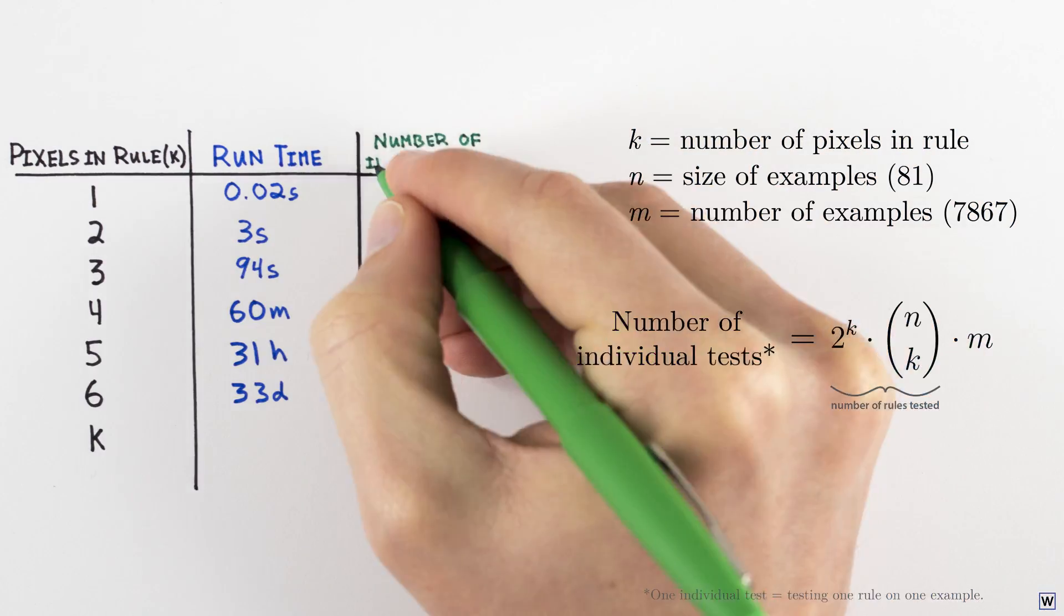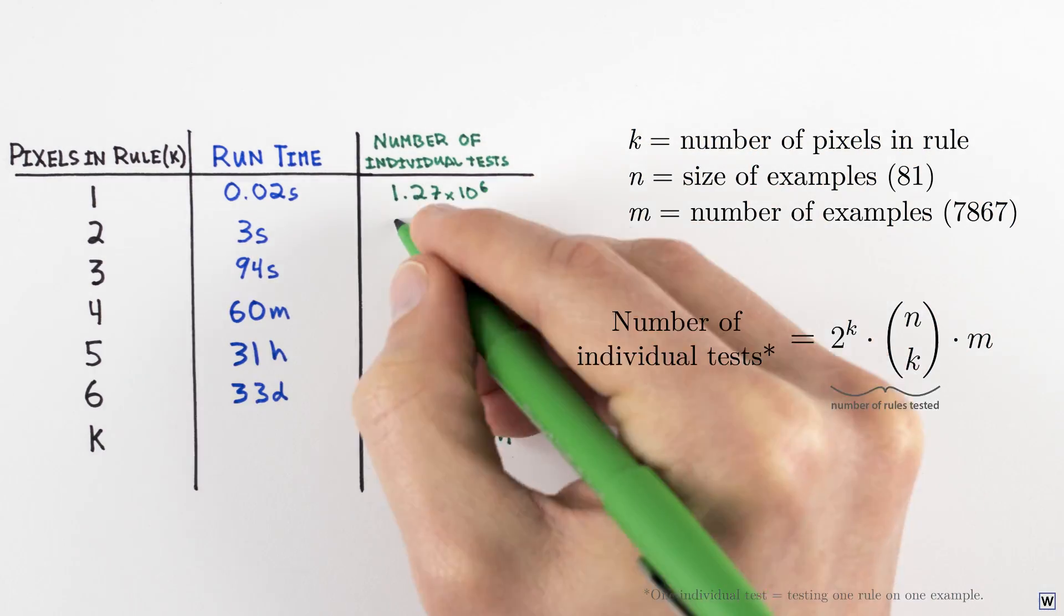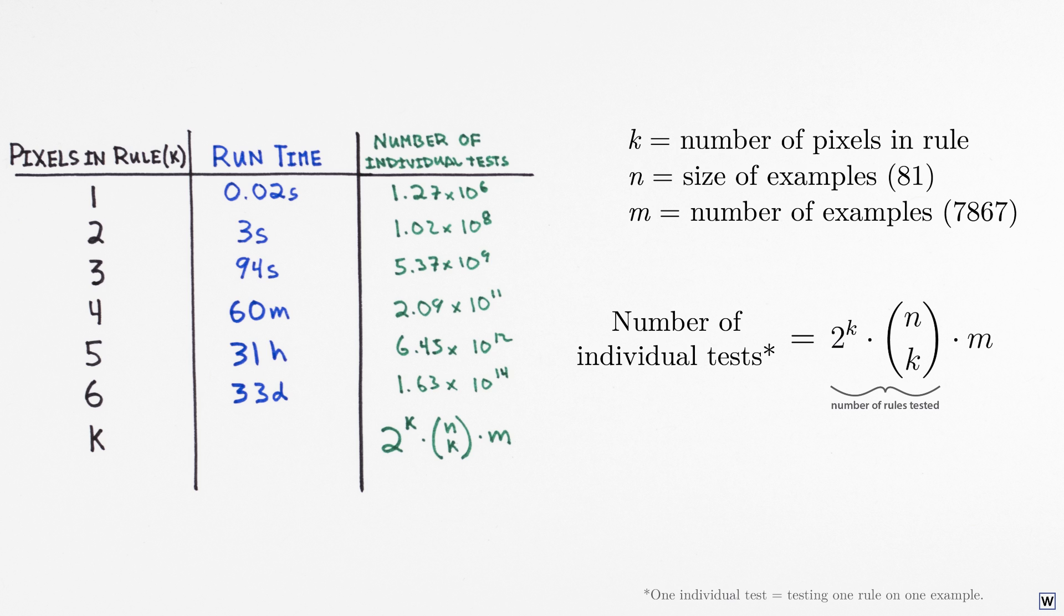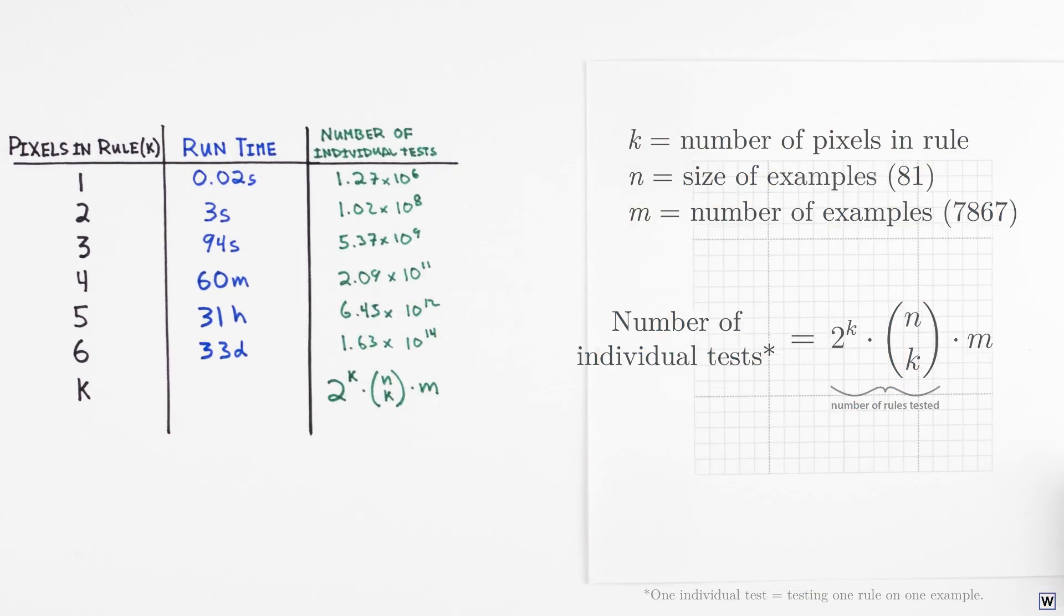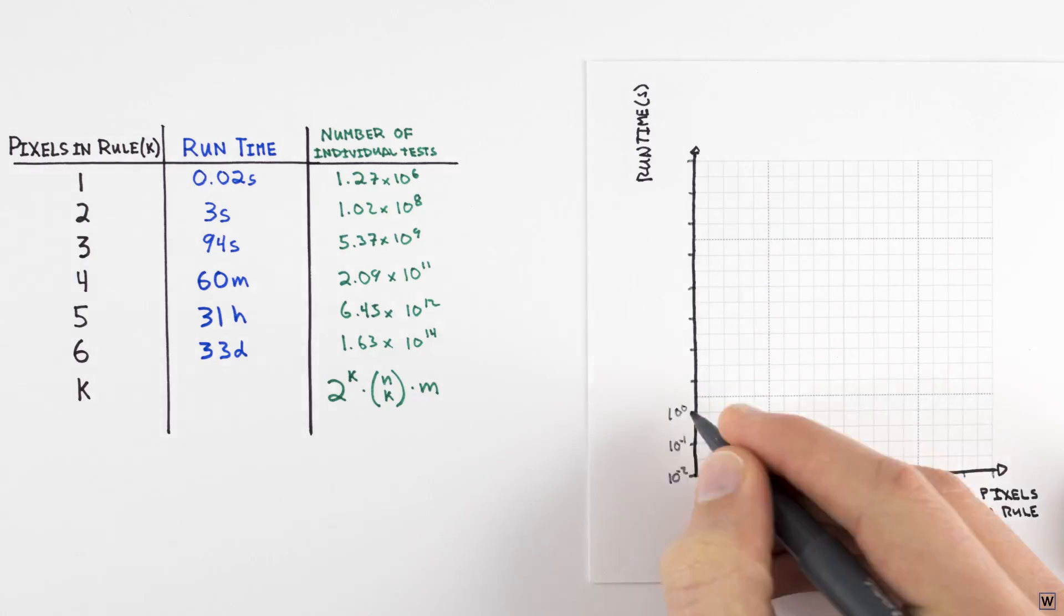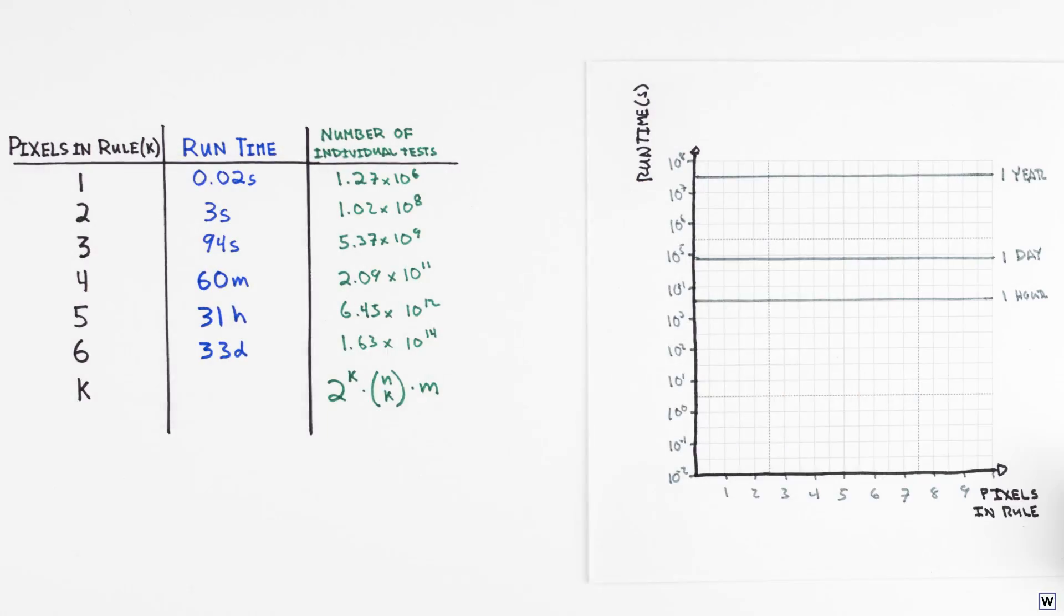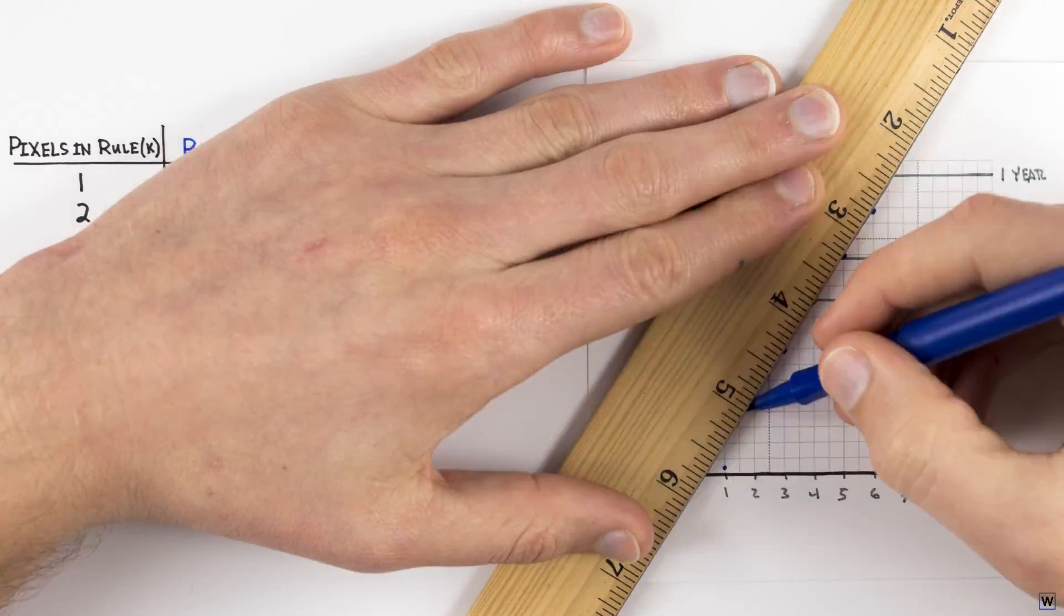While exact run times will of course vary between computers and programming languages, as long as the time required to test a single rule on a single example is constant, the increase in run time for our algorithm should follow this trend. And as we know, this function becomes absolutely enormous for even moderate values of k, making our solution intractable.